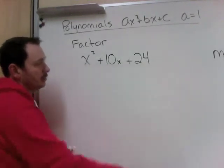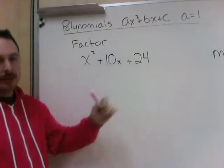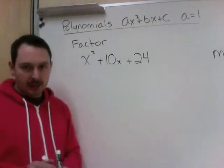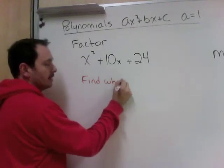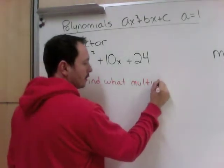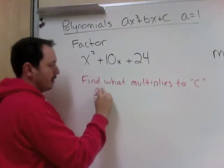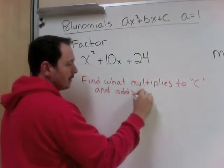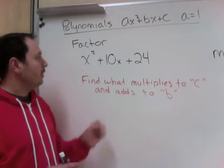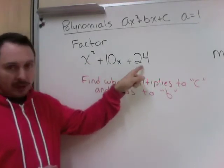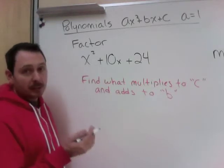So to factor this, your first step when you're in trinomial form x squared plus 10x plus 24 is you need to find all of the parts. Find what multiplies to c and adds to b.